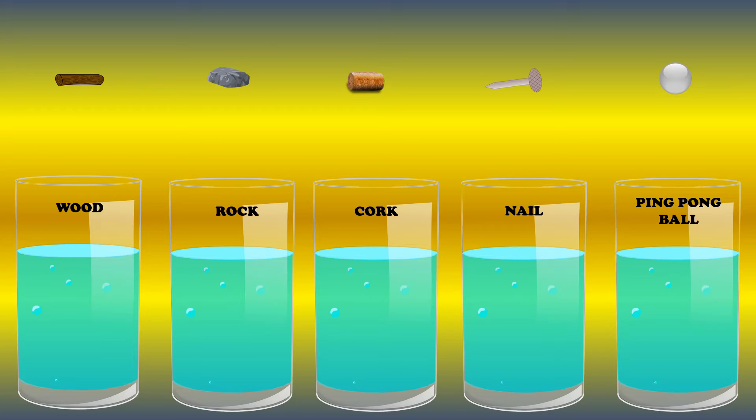Now let's talk about density. We have here five glasses filled with water. We have different objects to drop inside: wood, rock, cork, nail, and ping pong ball. This illustration will explain density and states of matter. We'll drop the piece of wood in water, then the rock, then the cork, nail, and ping pong ball. As you can see, some of them float on the water and some submerge or sink.